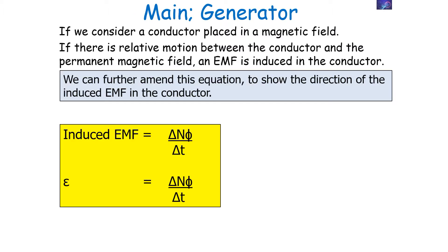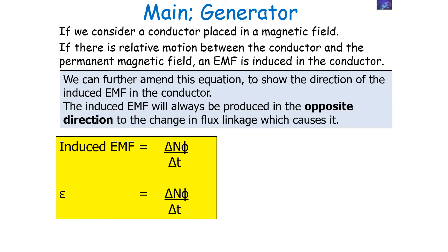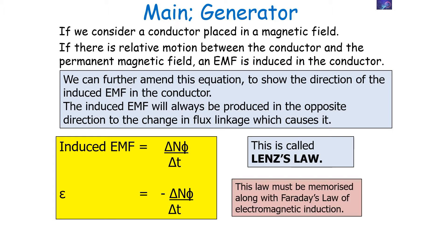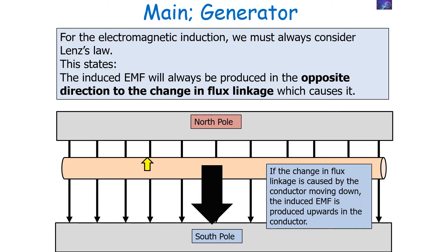If we consider a conductor placed in a magnetic field, and there's relative motion between the conductor and the permanent magnetic field, an EMF is induced in the conductor. We noted in a previous lesson that induced EMF equals the change in flux linkage divided by the change in time. We can further amend this equation to show the direction of the induced EMF. The induced EMF will always be produced in the opposite direction to the change in flux linkage that causes it. This idea is Lenz's law, and we incorporate it into Faraday's law by adding a negative sign to the equation.